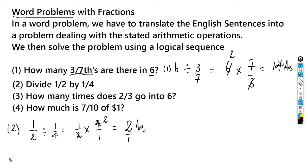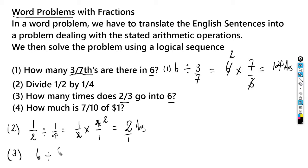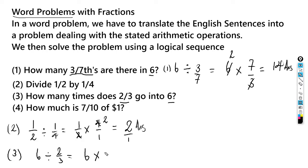Number three is similar to number one. It says: how many times does two over three go into six? We divide six by two over three, then flip the right side to get six multiplied by three over two. Two goes into six three times, and three times three gives us nine. That's the answer.